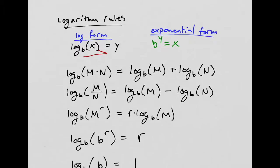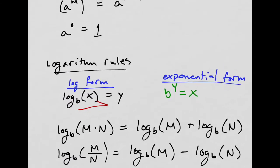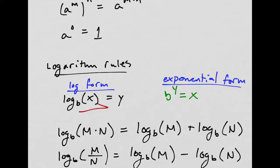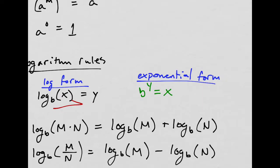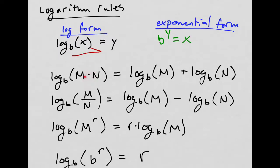Logarithm rules. This is log form. If you use magic seven, you can get exponential form. B to the Y equals X. You could flip this around too. So it's like B to the Y equals X. So X would be on the left side, but same thing.